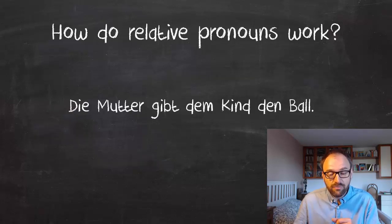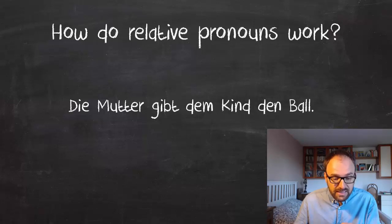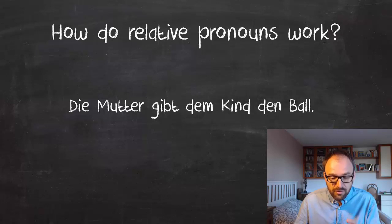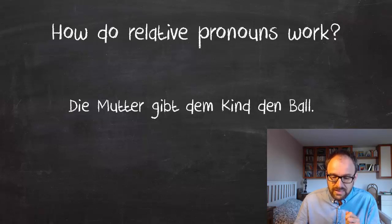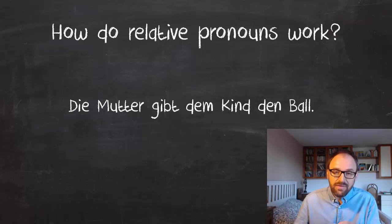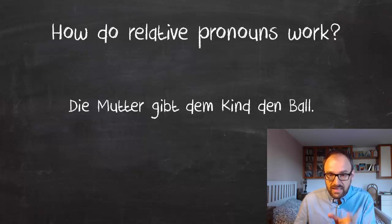How does that look in real life? Let's approach this in two stages. First, here's a typical German sentence. It's very important that you understand the use of the cases here. The mother gives the ball to the child — the mother is nominative, the child is dative, and the ball is accusative. A useful rule: when there are two objects — a living being and a thing — the person is in dative case and the thing is in accusative case. So here, 'Kind' (child) is dative, and the ball, which is a thing, is accusative.